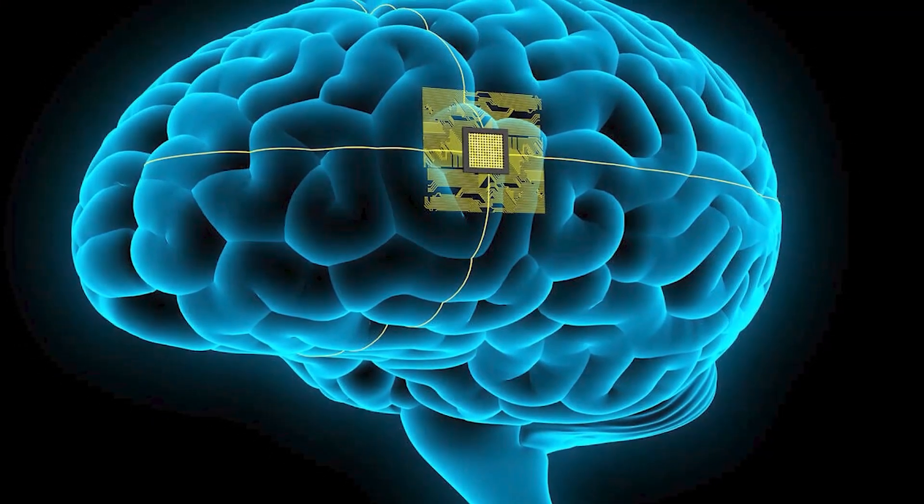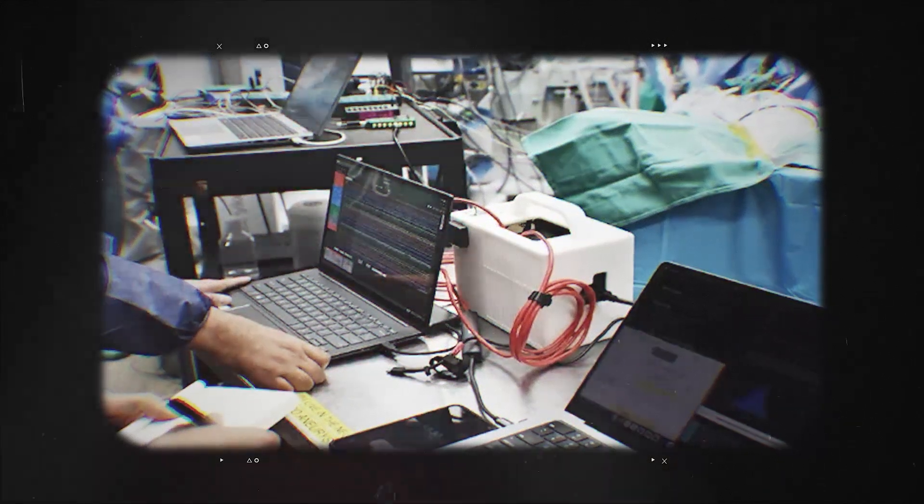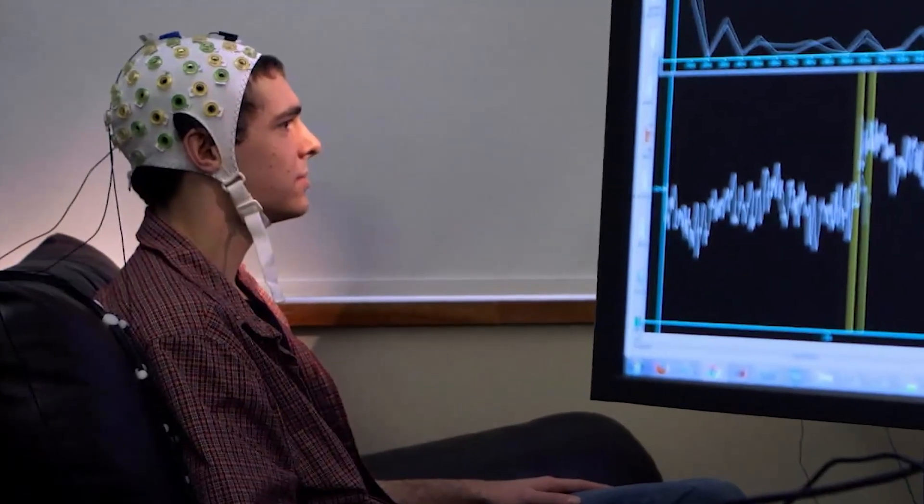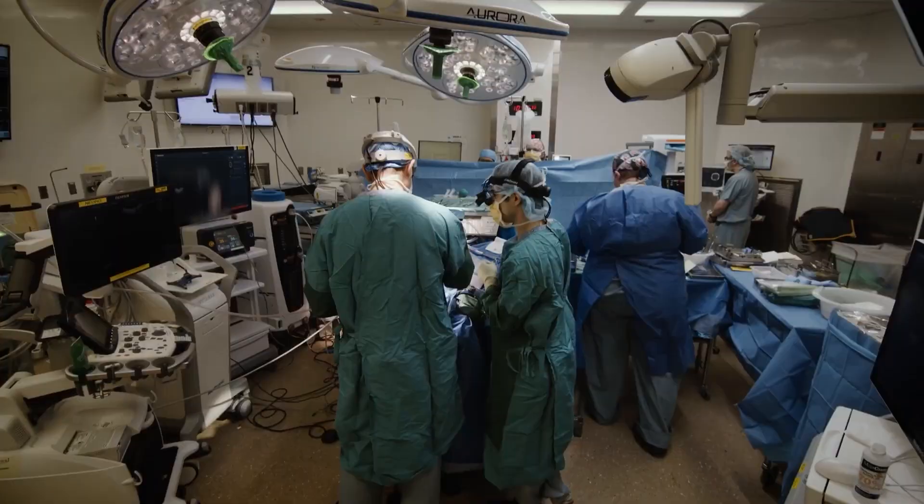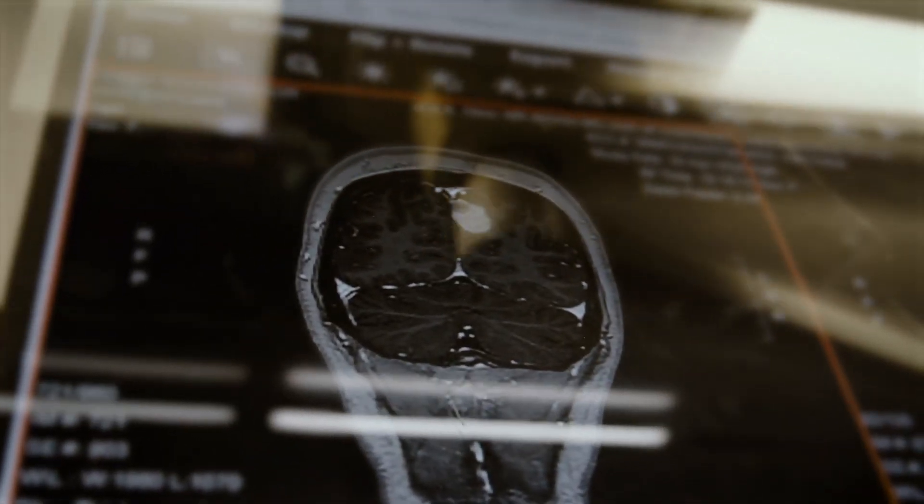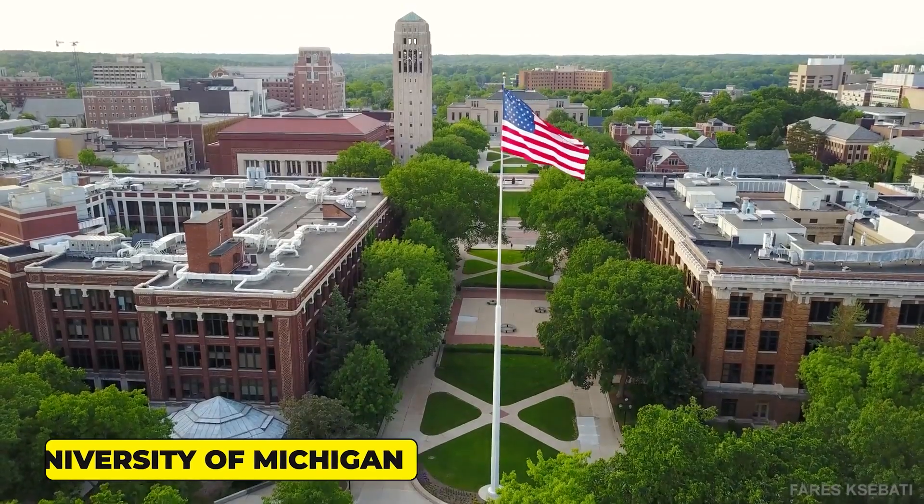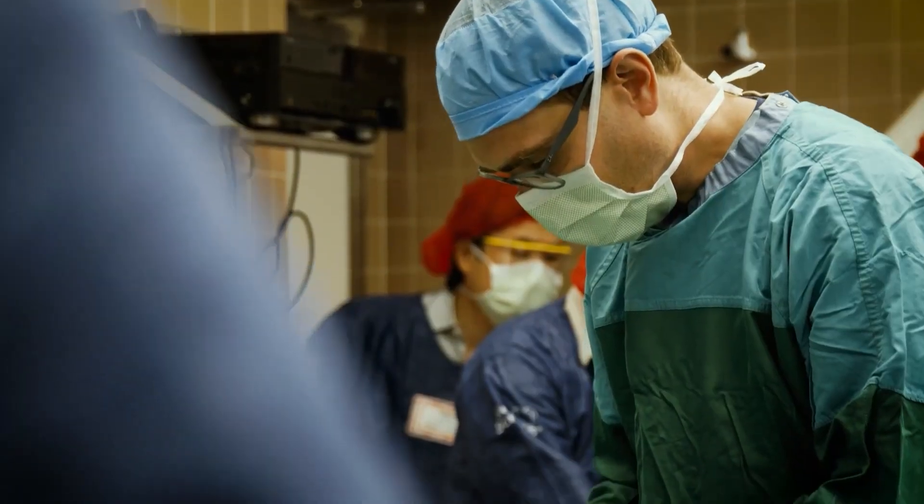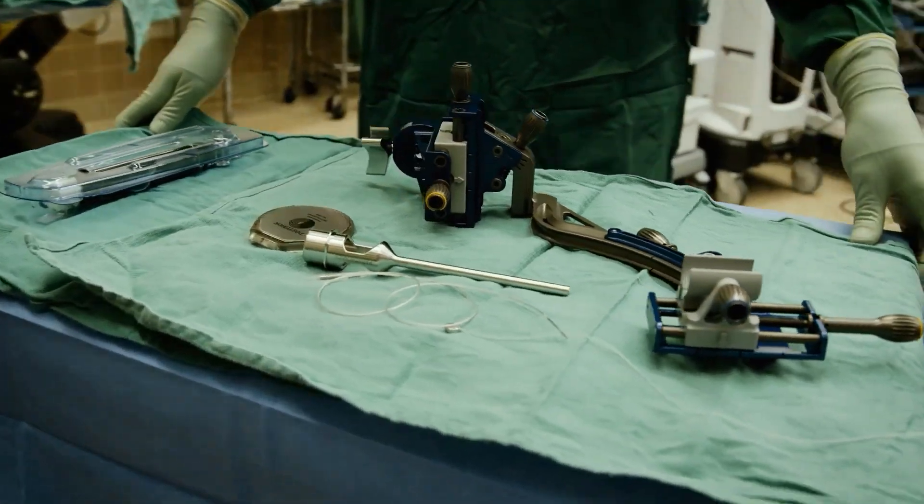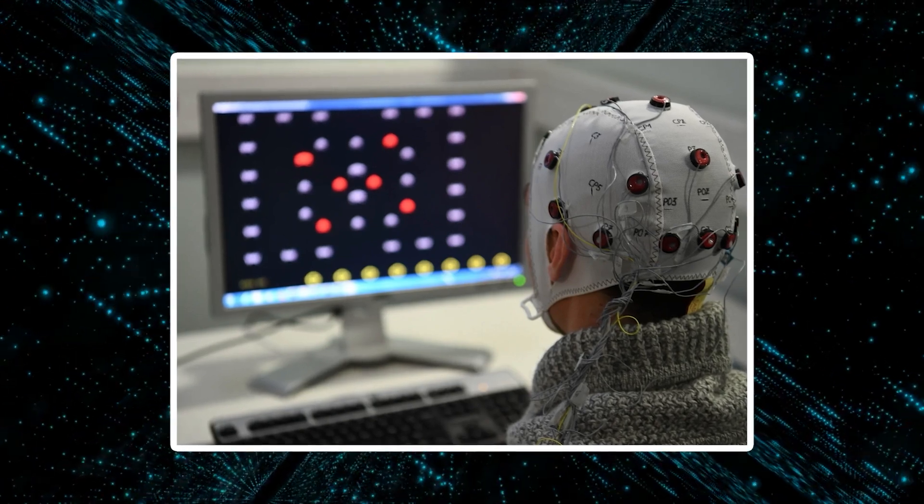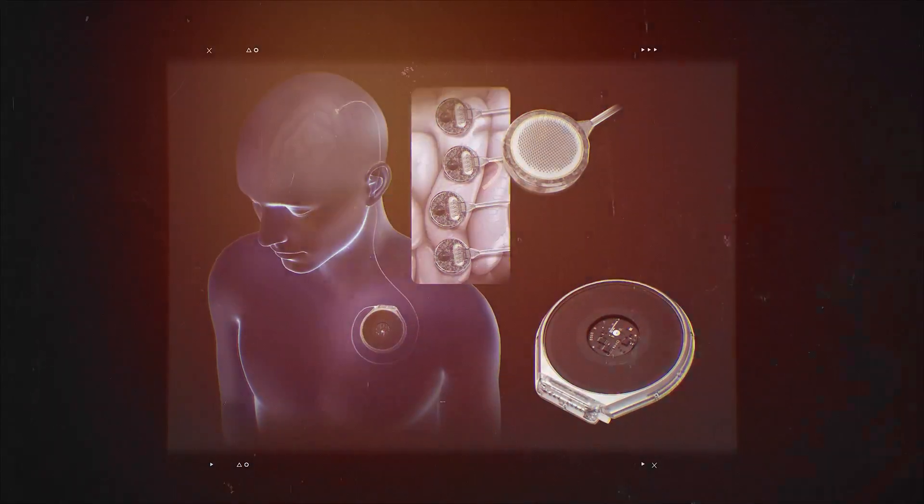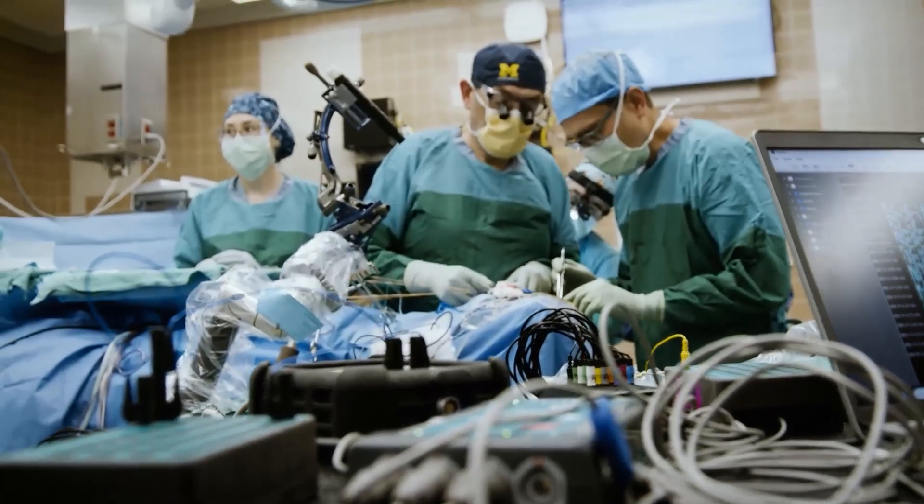Speaking of rivals, the brain-computer interface landscape is rapidly evolving beyond Neuralink. Texas-based Paradromics recently achieved a critical milestone by successfully testing its Conexus BCI in a human patient during epilepsy surgery at the University of Michigan. Smaller than a dime, the implant records neural activity at the single neuron level, translating brain signals into commands for patients with severe motor impairments from ALS, strokes, or spinal cord injuries. Paradromics CEO Matt Angle confirmed the device was safely implanted and removed within 20 minutes using standard neurosurgical techniques, marking the company's transition to clinical stage development.